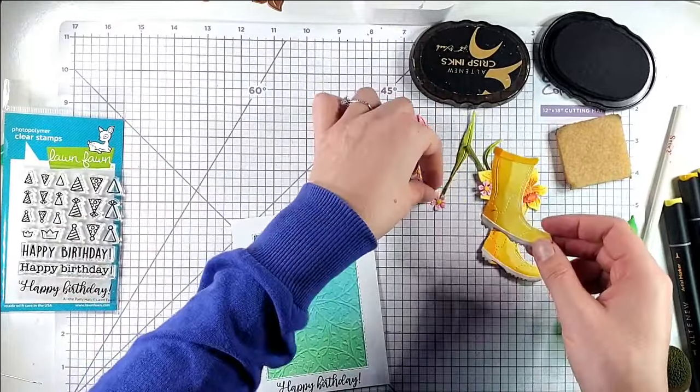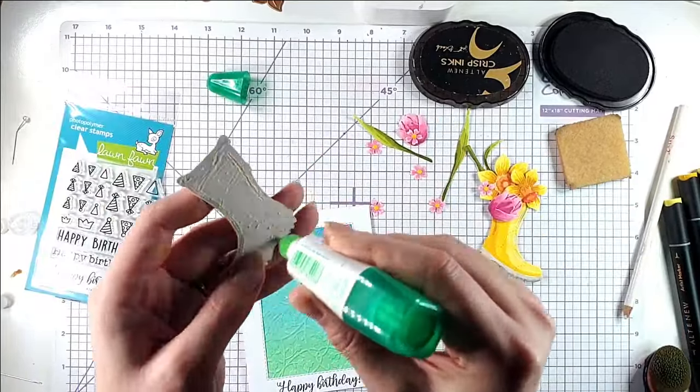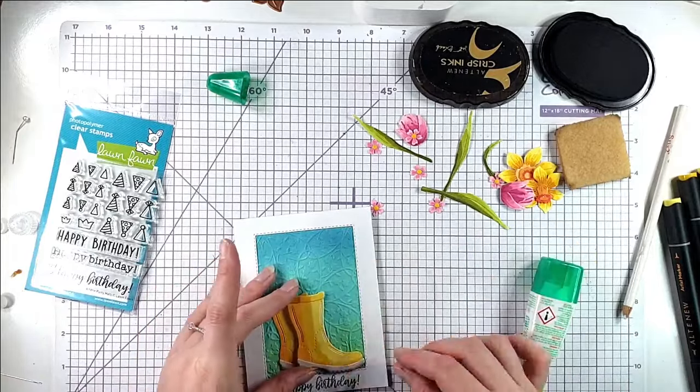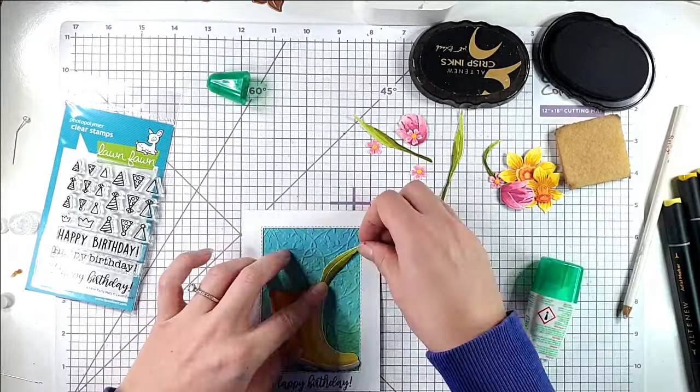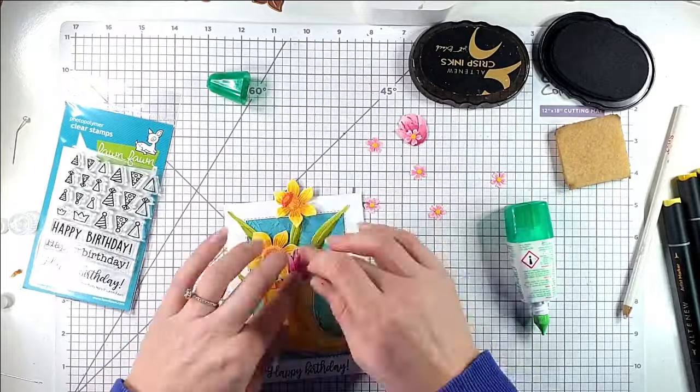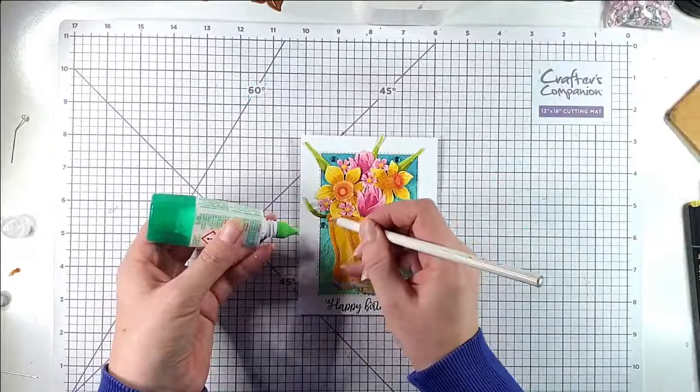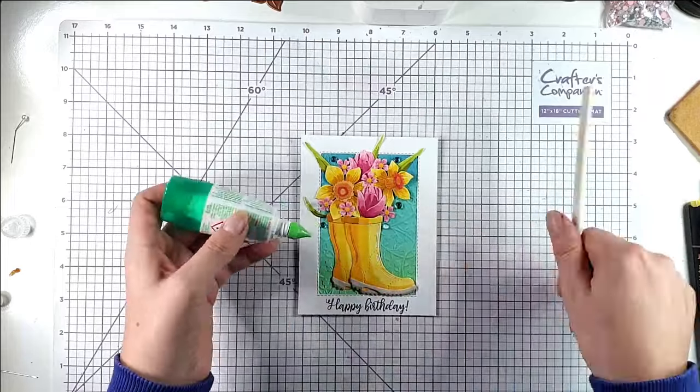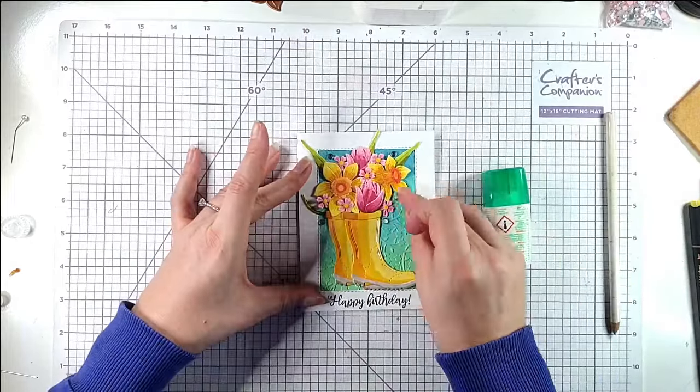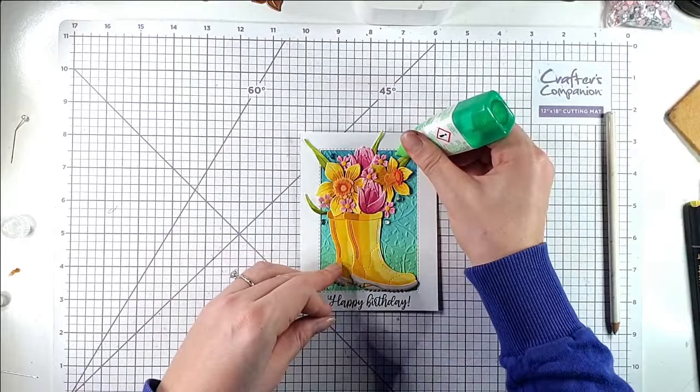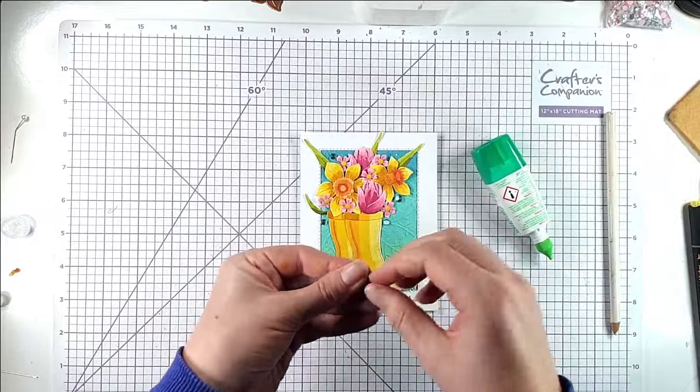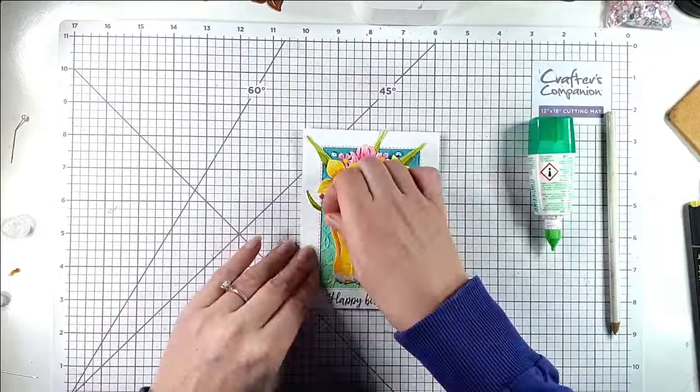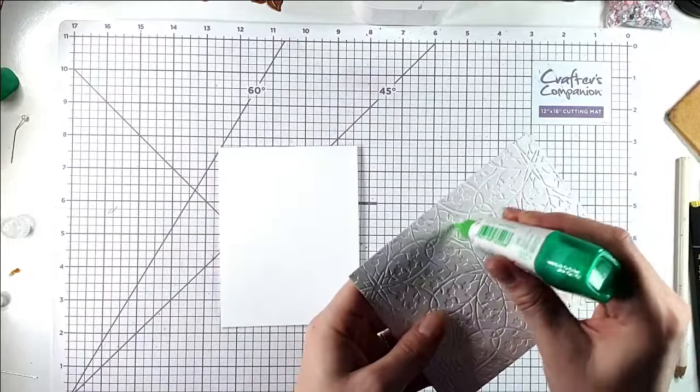Then I can start gluing on all my die cut pieces. Then I'm just going to add on some of these little clear gems. With these gems you can see the glue through when you first put them on, but as soon as they dry then they go back to clear again. So then all I need to do now is just add this to my card front.